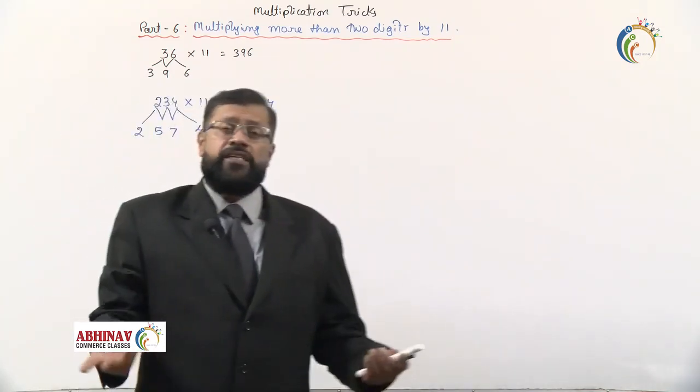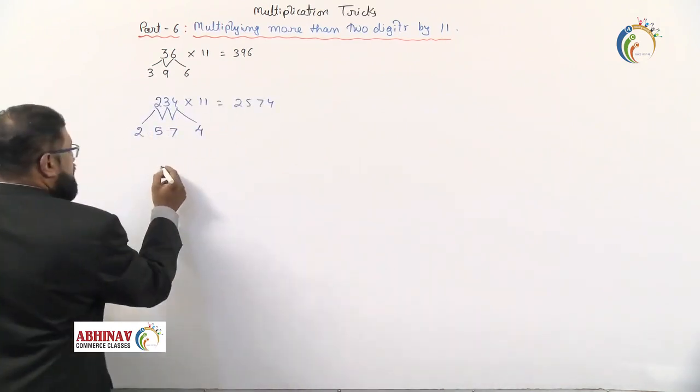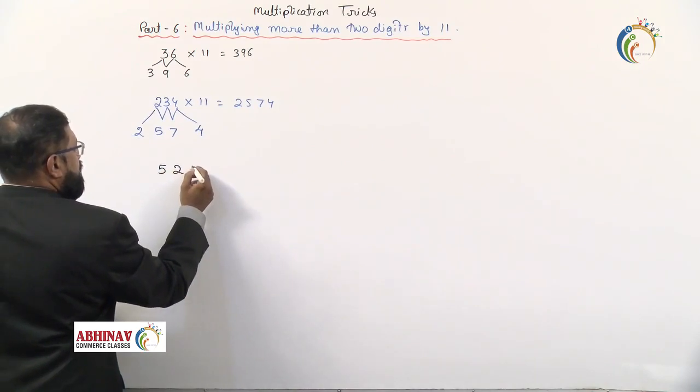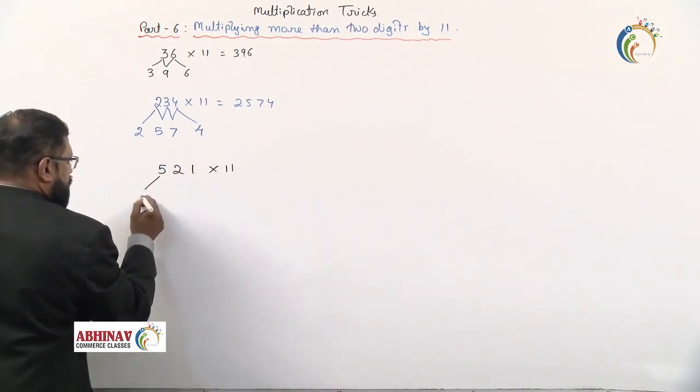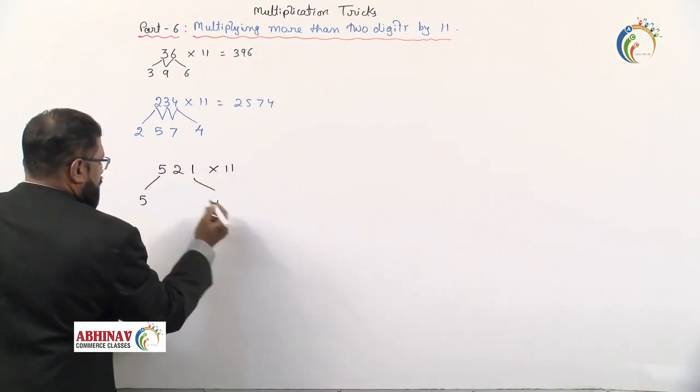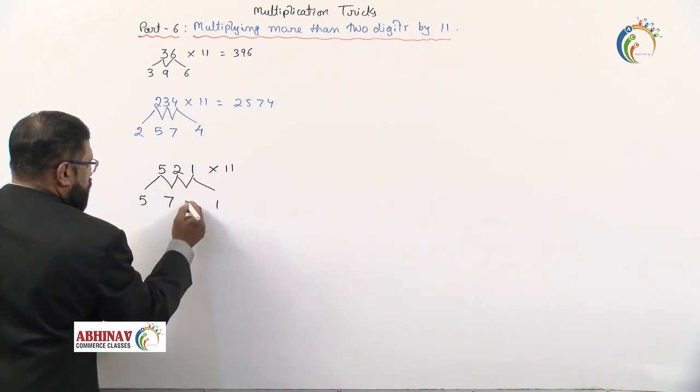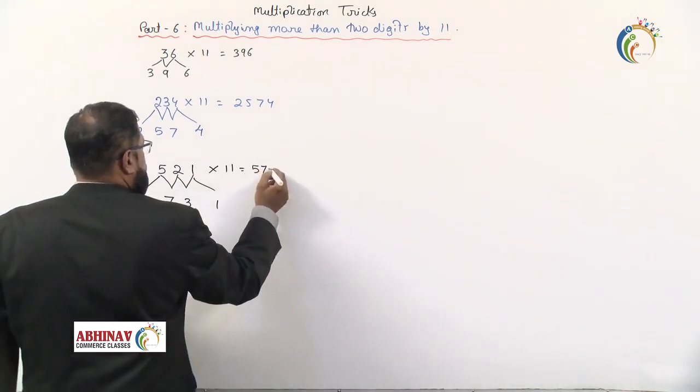These are the tricks we have to use. Let's take one more: 521 multiplied by 11. First, write 5, then write 1. 5 plus 2 is 7, 2 plus 1 is 3. So this answer comes to 5731.